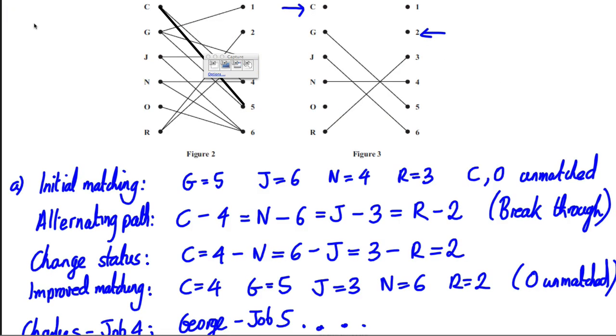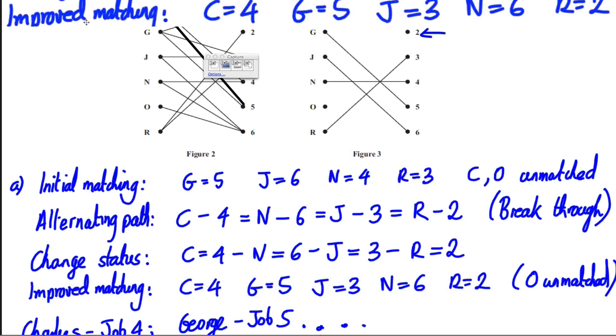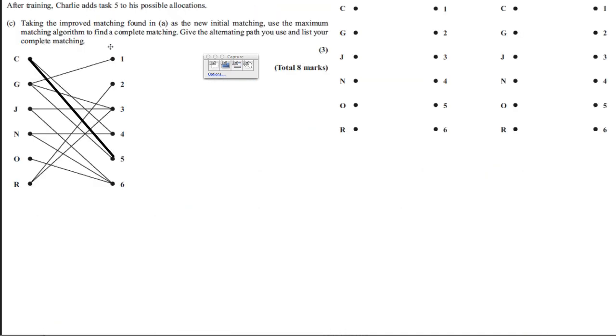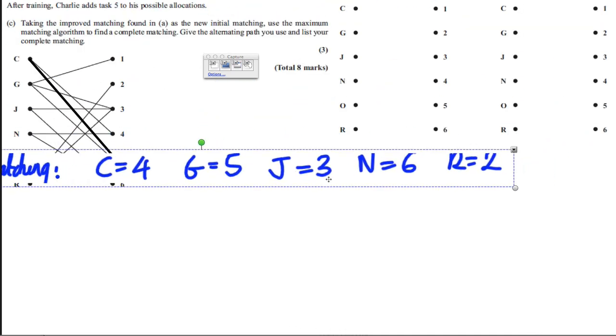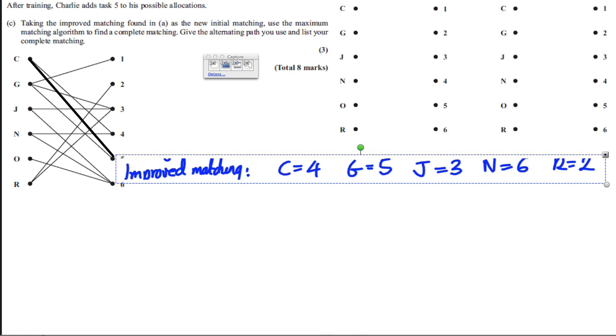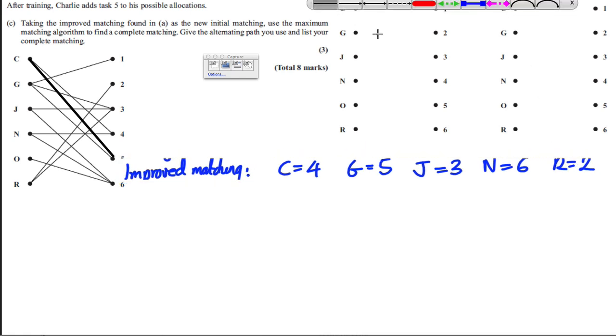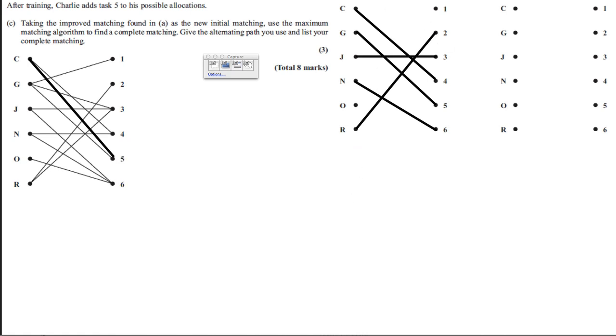And I know also that my improved matching, my starting position for my improved matching was as follows. So from Part A. So I'm just going to take that with me over here. And in fact, what I'm going to do is I'm going to draw it on my original one. So C goes with 4 now. G goes with 5. J goes with 3. N goes with 6. And R goes with 2. But we know that O is unmatched. So there's my initial.